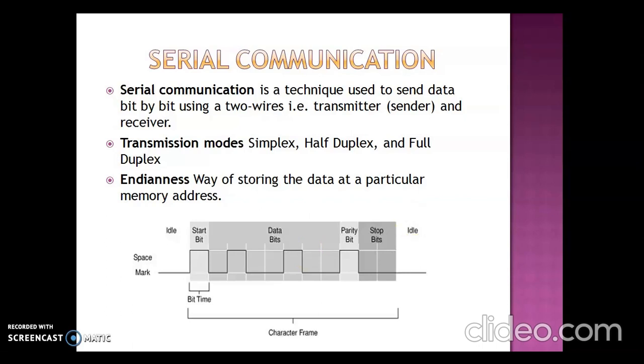After the parity bit in serial communication follows one or two stop bits, which indicate the transfer of the frame has been completed. Start bit, parity bit, data bit, and stop bit - all these four parts make one complete frame in serial communication.